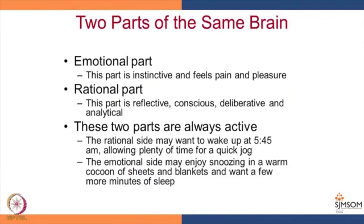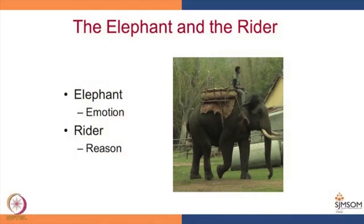The rational side may want to wake up at 5:45 allowing plenty of time for a quick jog, but the emotional part may enjoy snoozing in a warm cocoon of sheets and blankets and want a few more minutes of sleep. Same thing is with chocolate or samosas or vadas — our rational part says it is not good for us, but the emotional part says let us enjoy now and from tomorrow we will take care of this calorie business. If we compare elephant and rider with the emotional and rational parts — the rider is the rational part which directs, and the elephant is the emotional part.